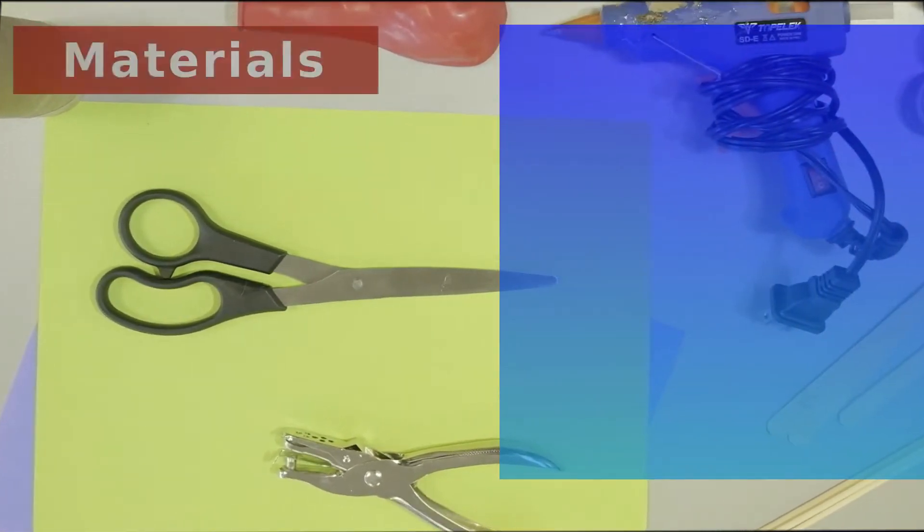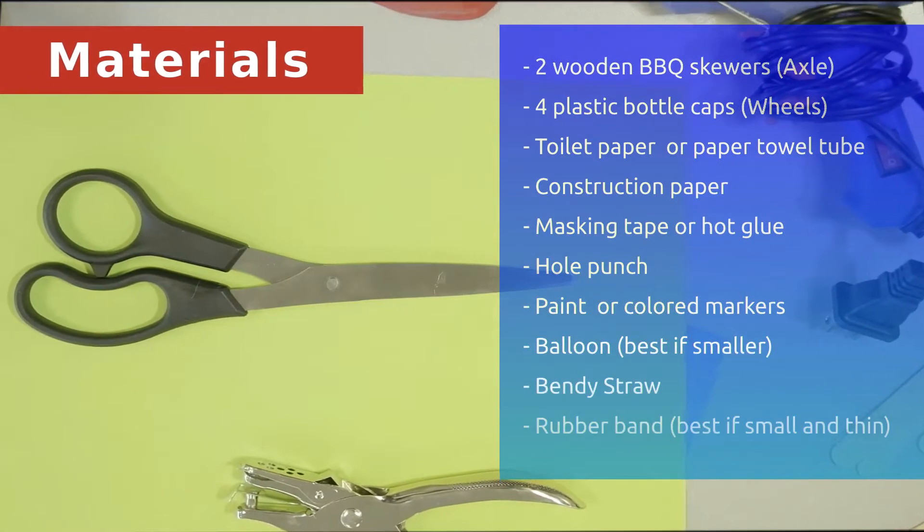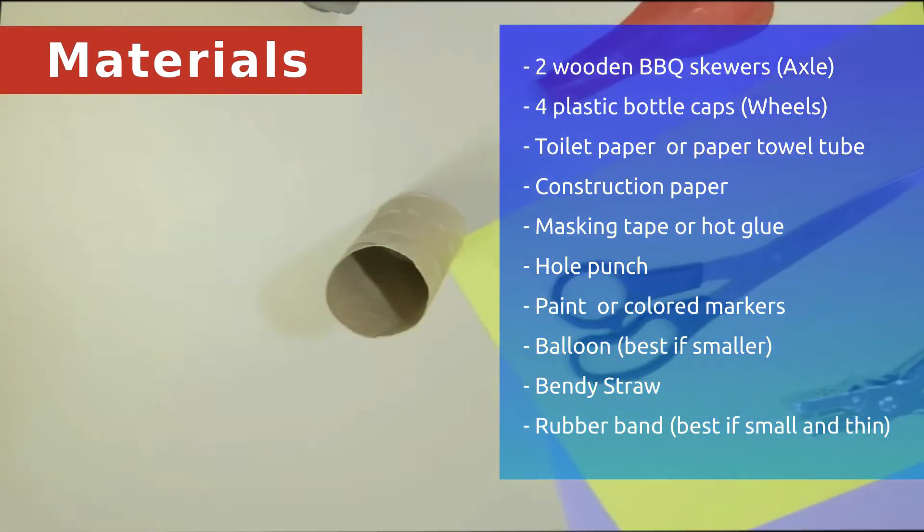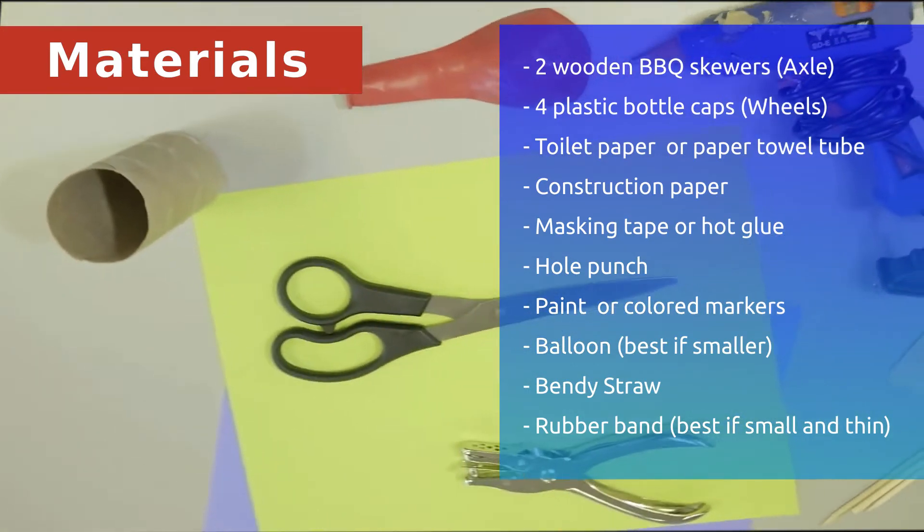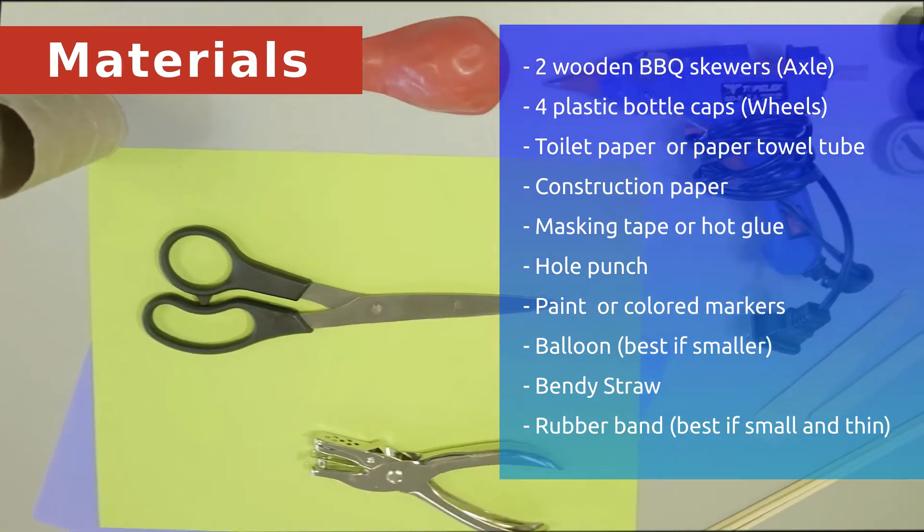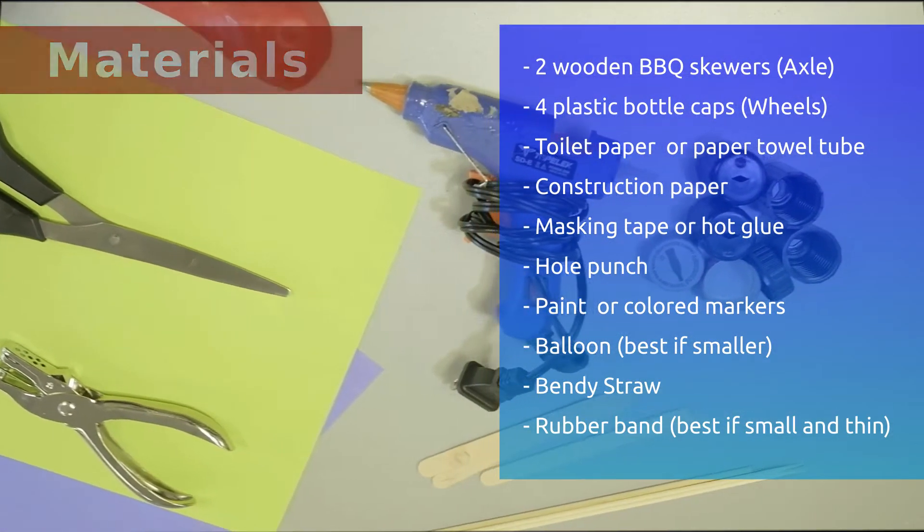The materials you'll need for this one are two wooden barbecue skewers for the axles, four plastic bottle caps for the wheels, a toilet paper tube or a paper towel tube, construction paper, masking tape or hot glue, a hole punch, paint or colored markers, a balloon, and a bendy straw.